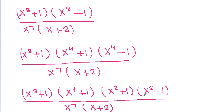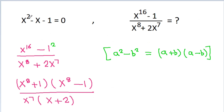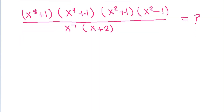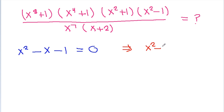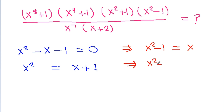Now x squared minus 1 is a quadratic expression. We have given that x squared minus x minus 1 is equal to 0, from which we can find the value of x squared minus 1, which equals x. Also, x squared equals x plus 1, so x squared plus 1 equals x plus 2, and x squared minus 1 equals x.